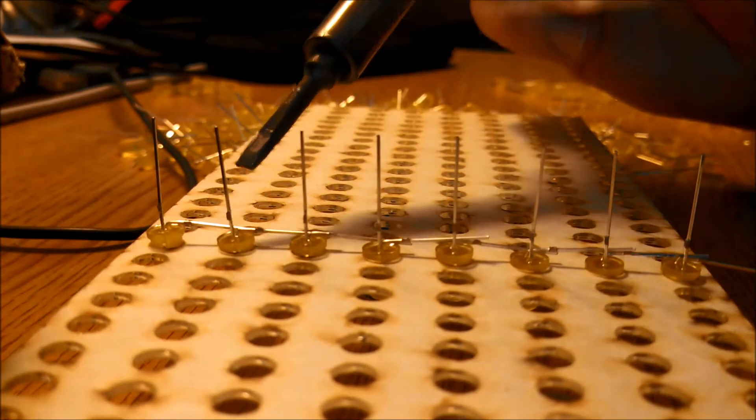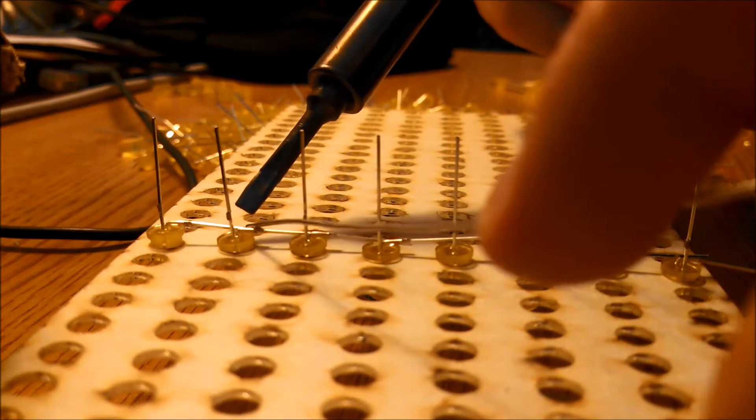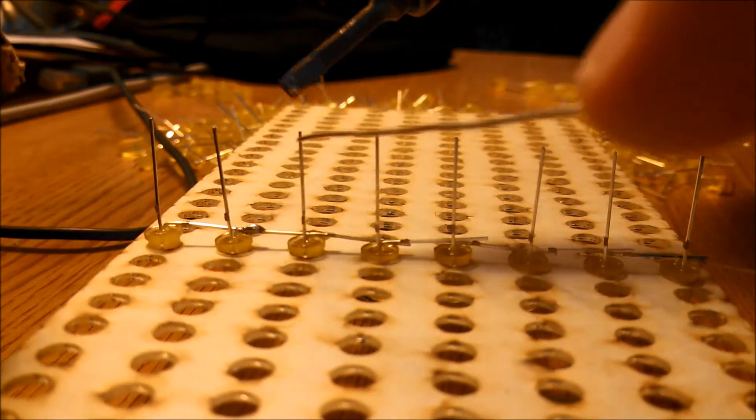Again, take your soldering iron, take your solder, apply a little bit of solder, touch it to where you want to solder, and then touch it with the soldering iron. Just like that, that one is soldered.